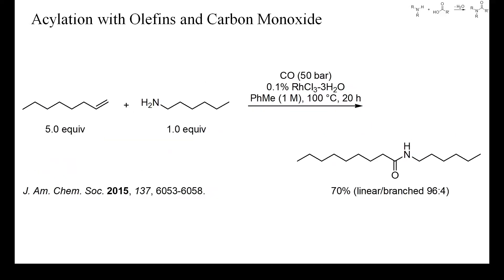There are many ways to generate the required intermediate organopalladium or organorhodium compounds. One possibility is the hydroformylation of an alkene, as in this example. No phosphine ligand and only 0.1% of rhodium chloride was required to attain a good yield of mostly the linear amide.